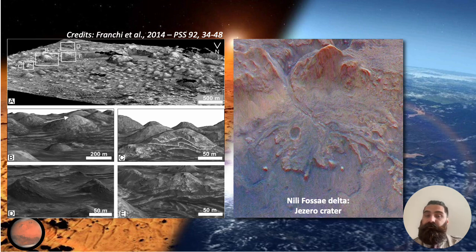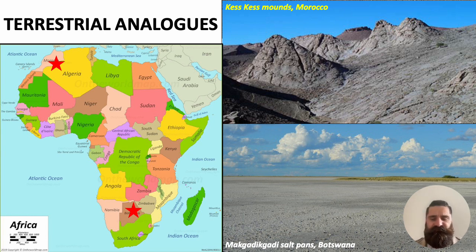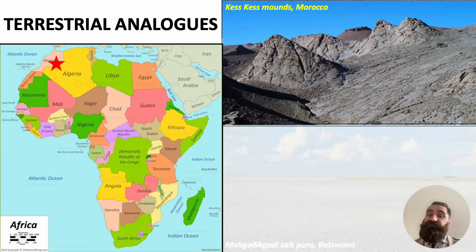We need to look at extreme environments on our planet that have a morphological resemblance with those we see on Mars. Today I'm taking you to Africa. I'm going to show you two examples — a fossil and an extant extreme environment, very different — that will allow you to approach the exercise later on with an open mind about what could be the use of extreme environments in planetary science. We start with the Cascues mounds in Morocco, in North Africa in the Sahara desert.